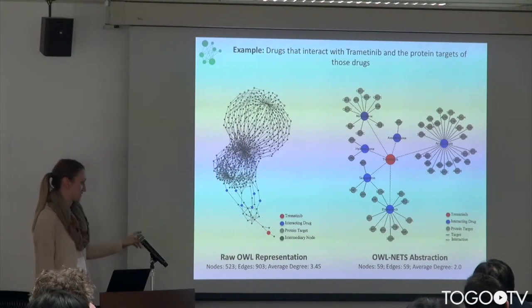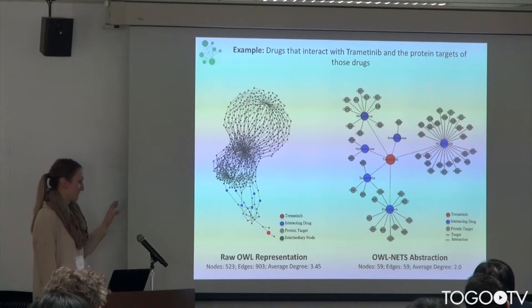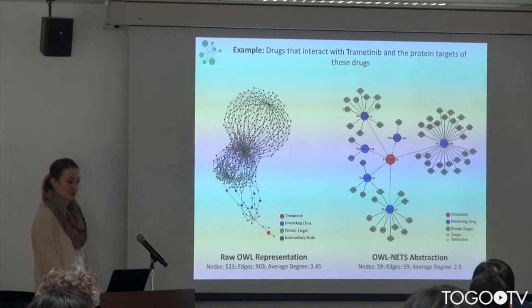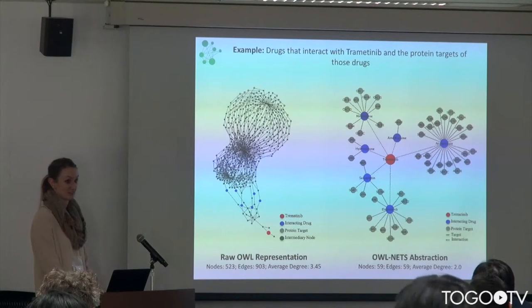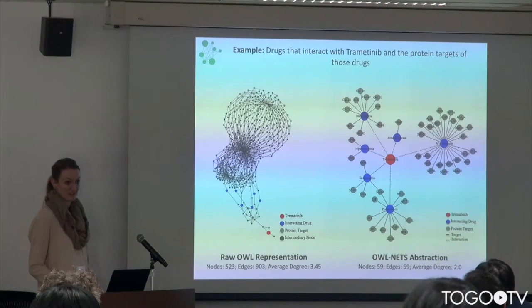In the original network when we were modeling it with OWL, we have 523 nodes and just over 900 edges. And the abstracted version reduces that down to 59 nodes and edges.